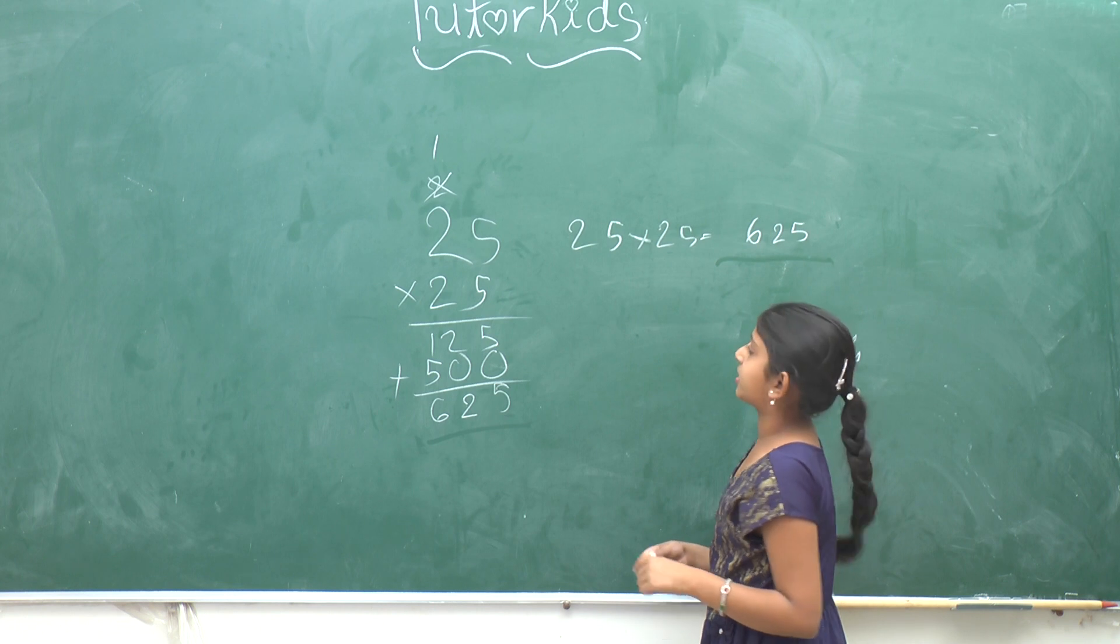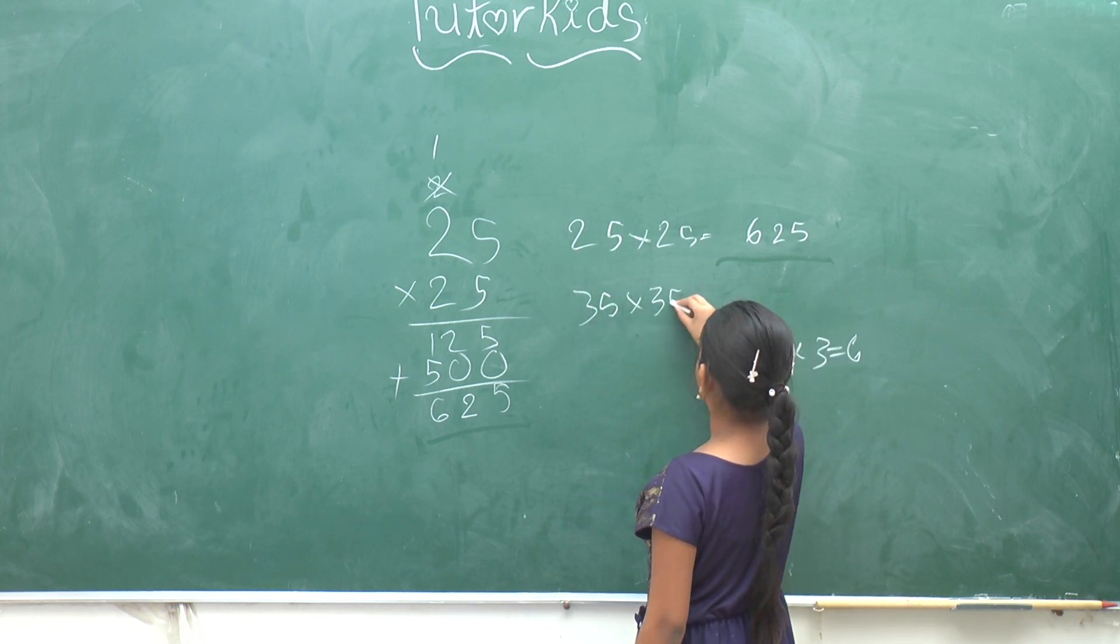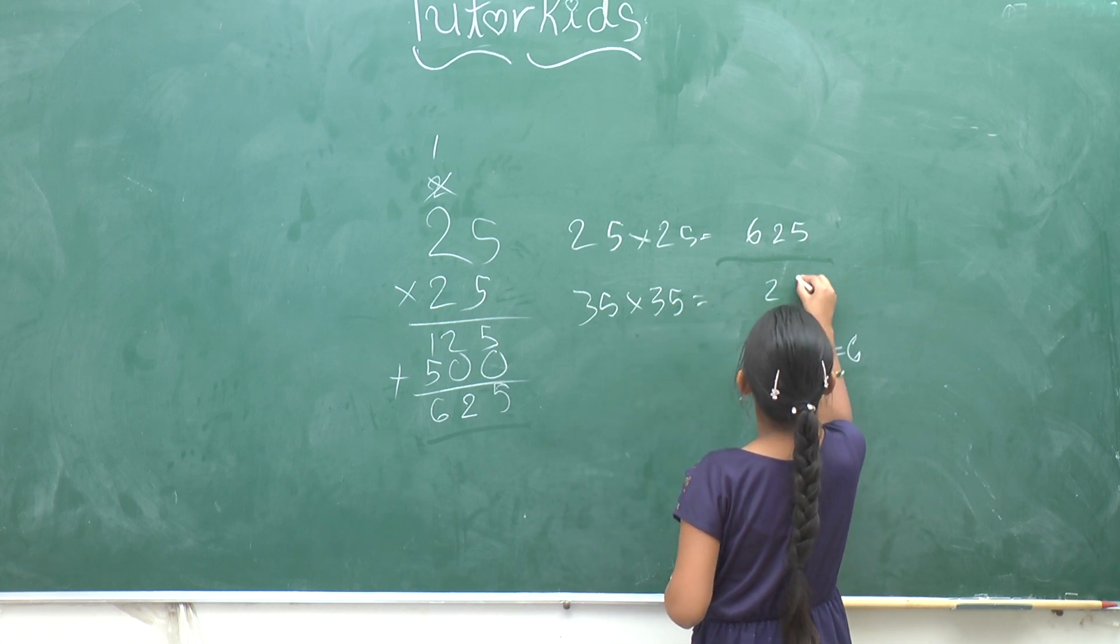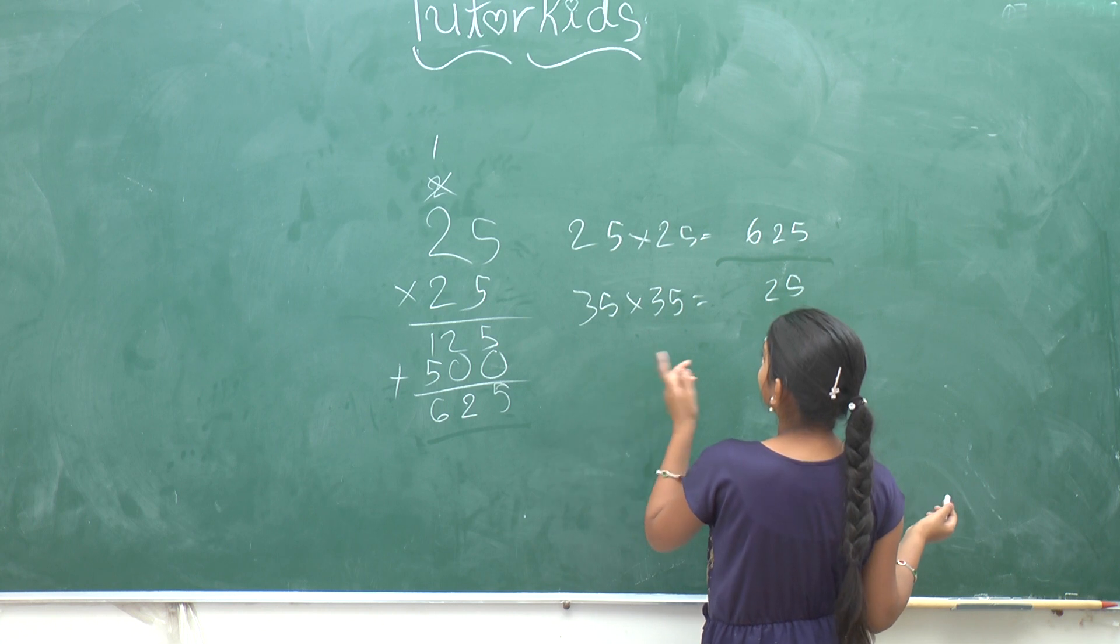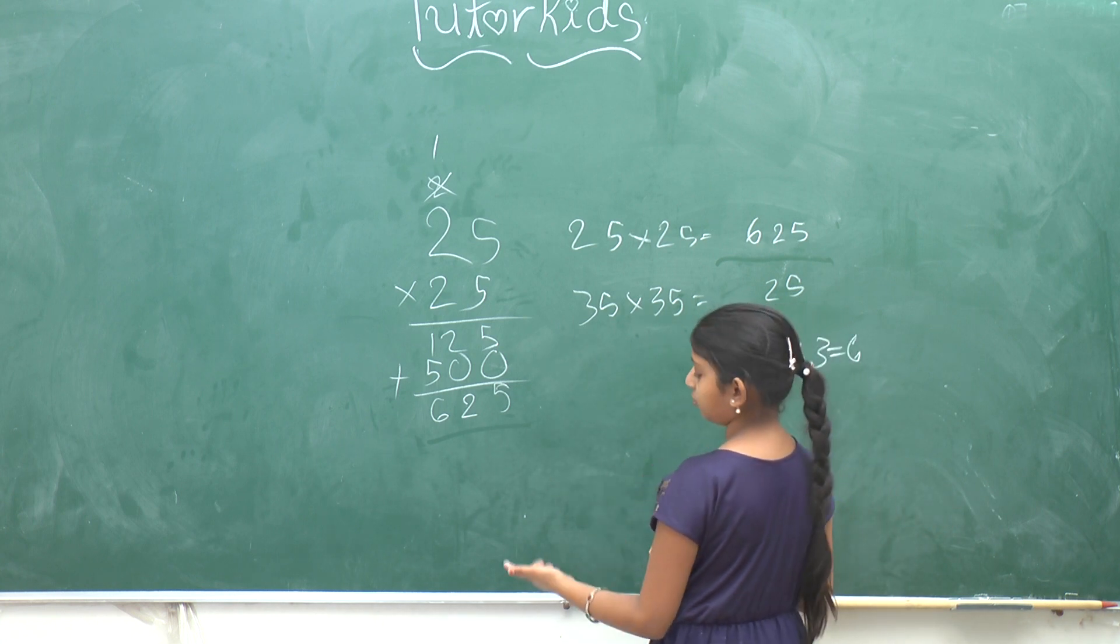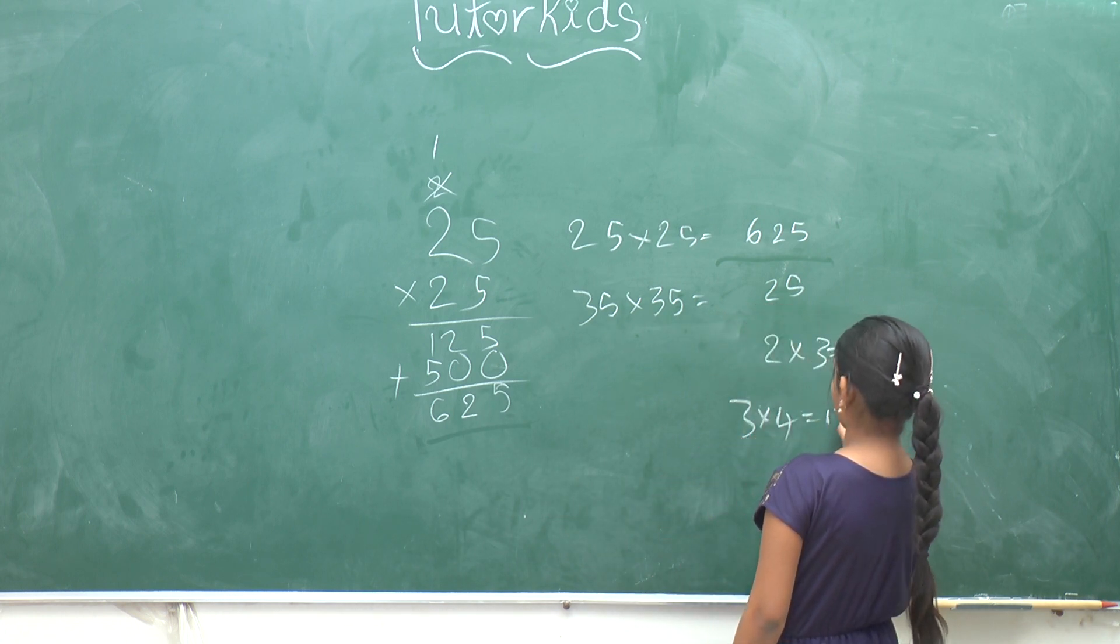Let's take another number for example. Like 35 times 35, which equals 5 times 5 is 25. And then 3 times 3, and then the next number: 1, 2, 3, and 4. 3 times 4 equals 12.